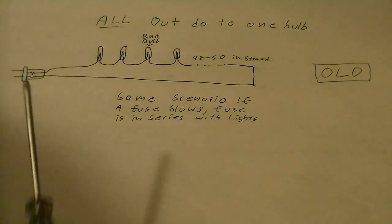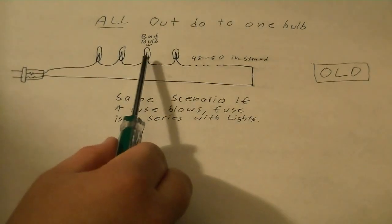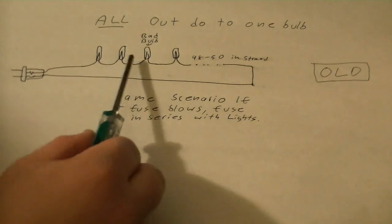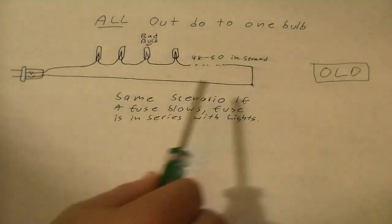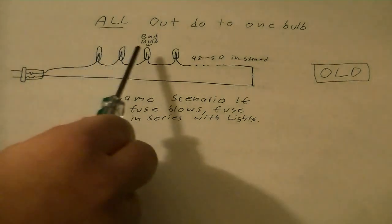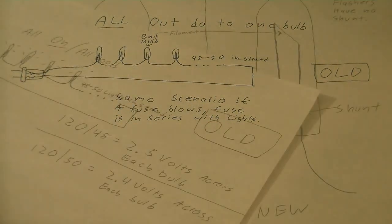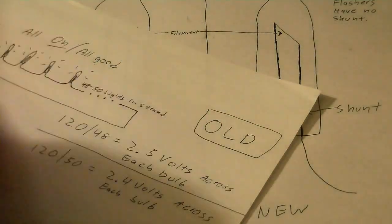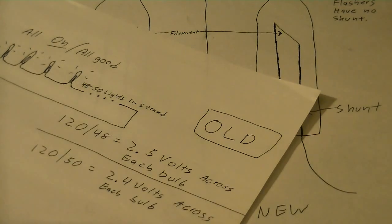This here shows an example of a bad bulb. If one bulb goes out, they're all off. The same scenario applies if a fuse blows because a fuse is in series with the whole entire circuit.